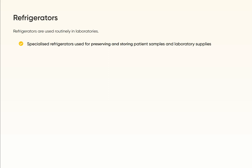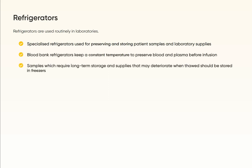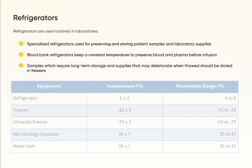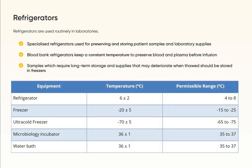Refrigerators are used routinely in laboratories. Specialized refrigerators are used for preserving and storing patient samples and laboratory supplies. Blood bank refrigerators keep a constant temperature to preserve blood and plasma before infusion. Samples which require long-term storage and supplies that may deteriorate when thawed should be stored in freezers.